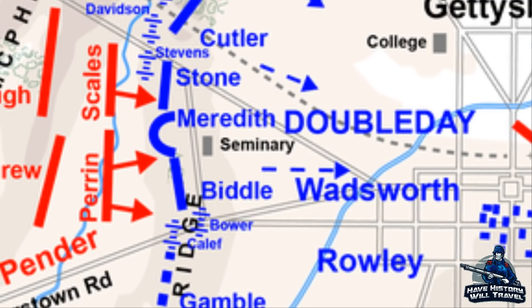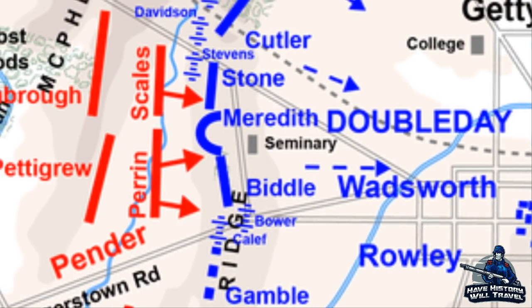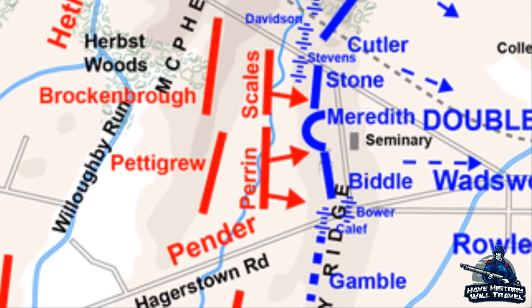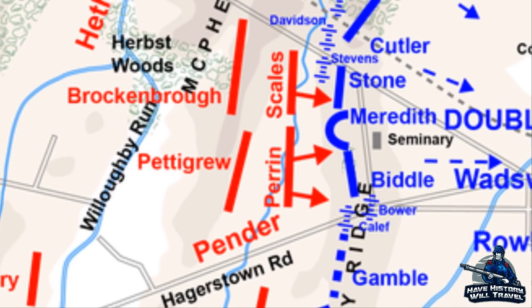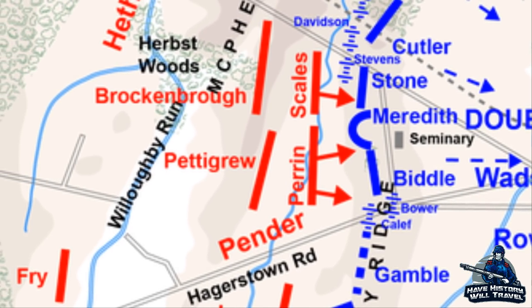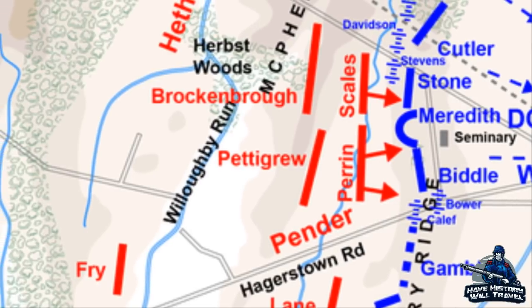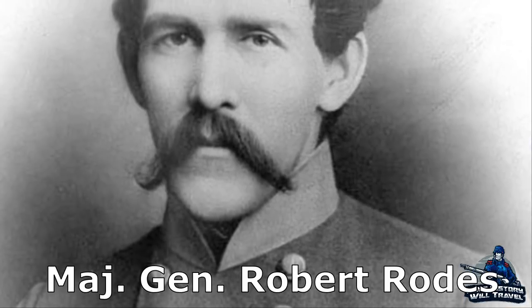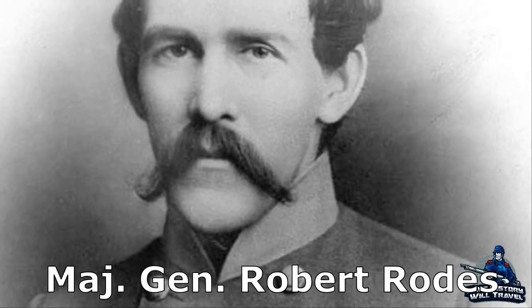Major General Henry Heath's division, under Lieutenant General A.P. Hill, made first contact with Buford's cavalry across Willoughby Run, and it would be Heath and Major General Dorsey Pender who would engage with the Union First Corps under Major General John F. Reynolds for control of McPherson's Ridge. As the Iron Brigade and the other brigades of the First Corps engaged Heath, Reynolds' other divisions went north to extend the Union right flank along Oak Ridge.